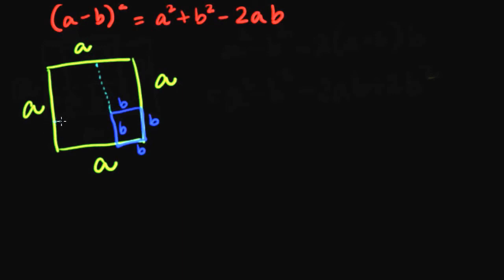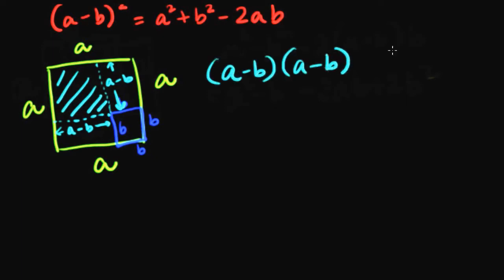So if you observe very carefully, this side is a minus b, this side is a minus b. So we want to find out the area of this square, which is a minus b into a minus b, that is equal to a minus b whole square. So let me call this as A.